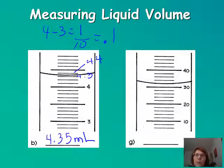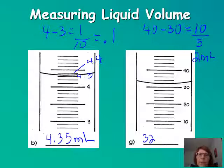All right. So here we have 40 minus 30 equal to 10. So we counted 1, 2, 3, 4, 5, divided by 5. So each of those is 2. So we're going to do 30, 32. So 32.0 milliliters. So you always have to include an uncertain digit when you're doing these.